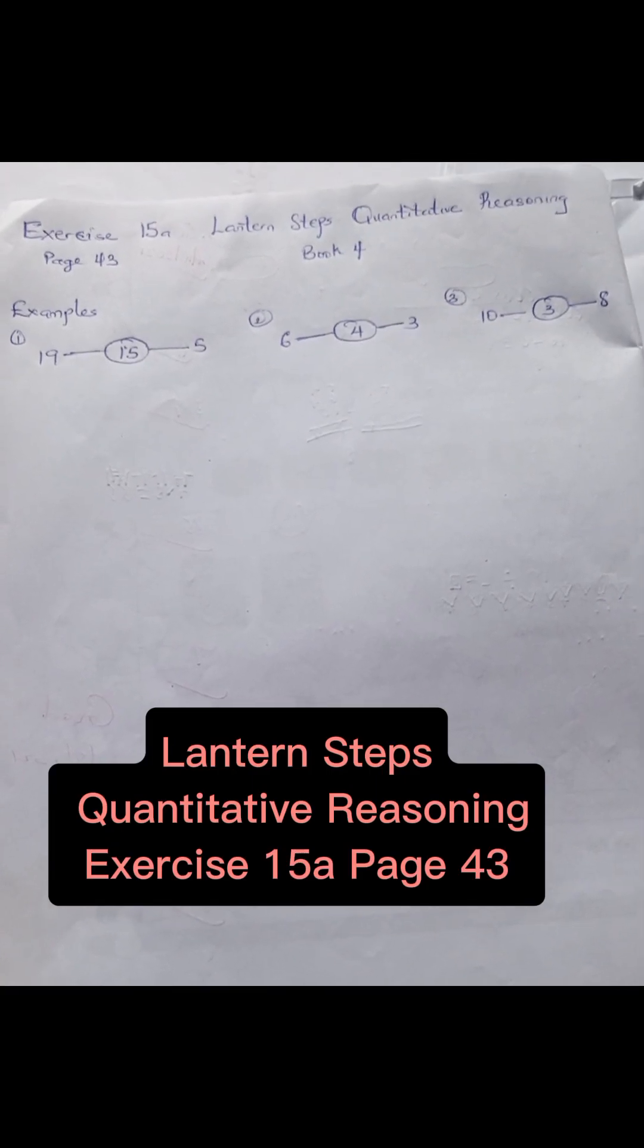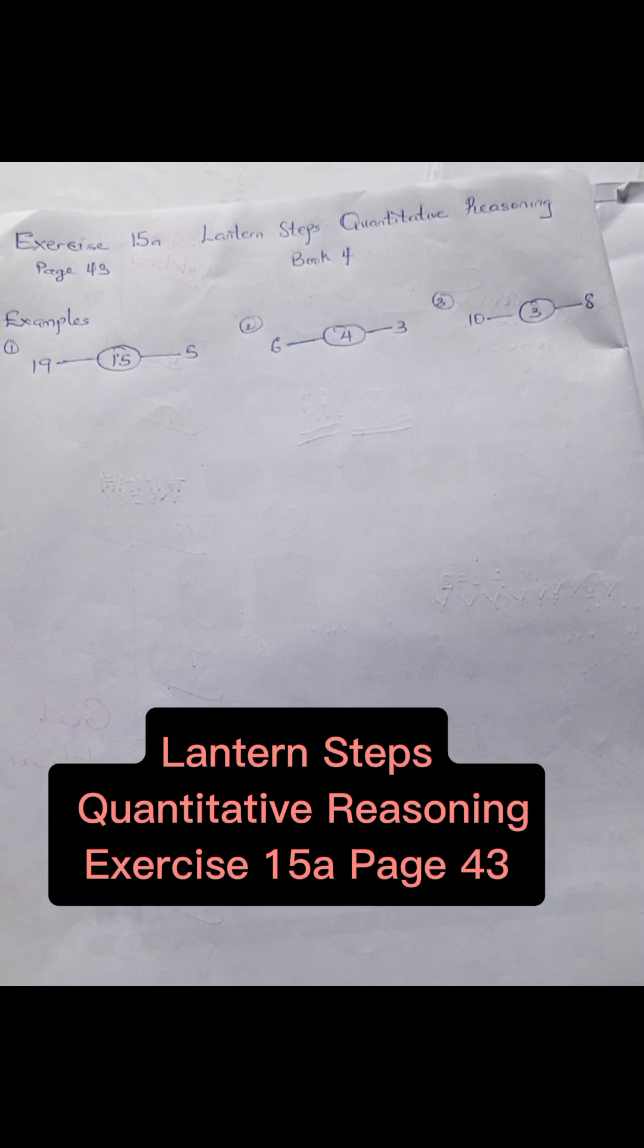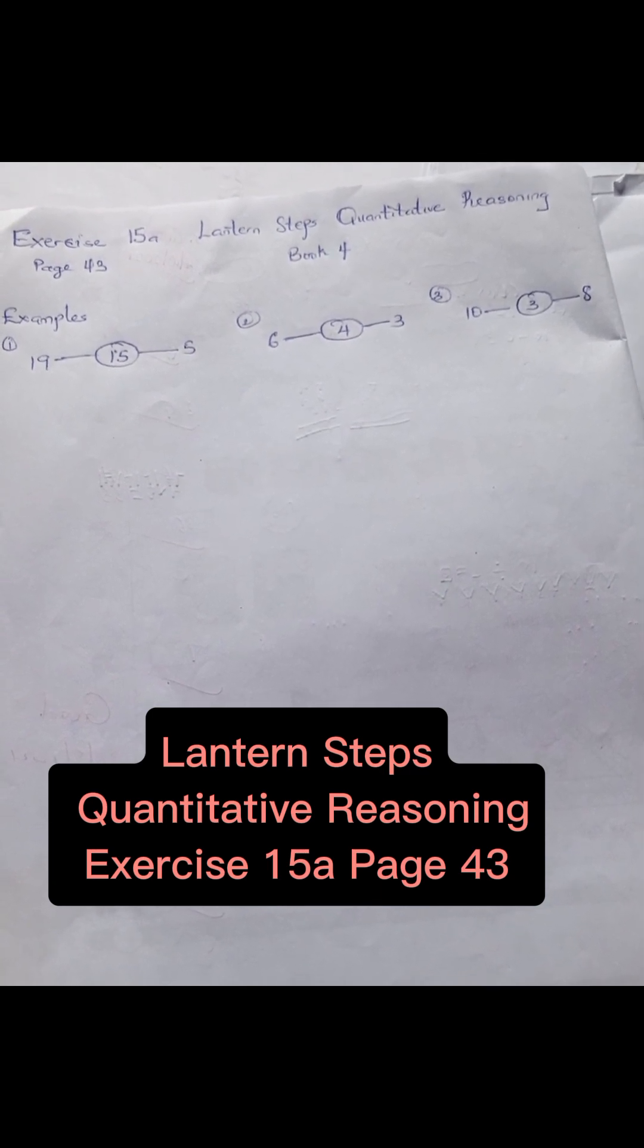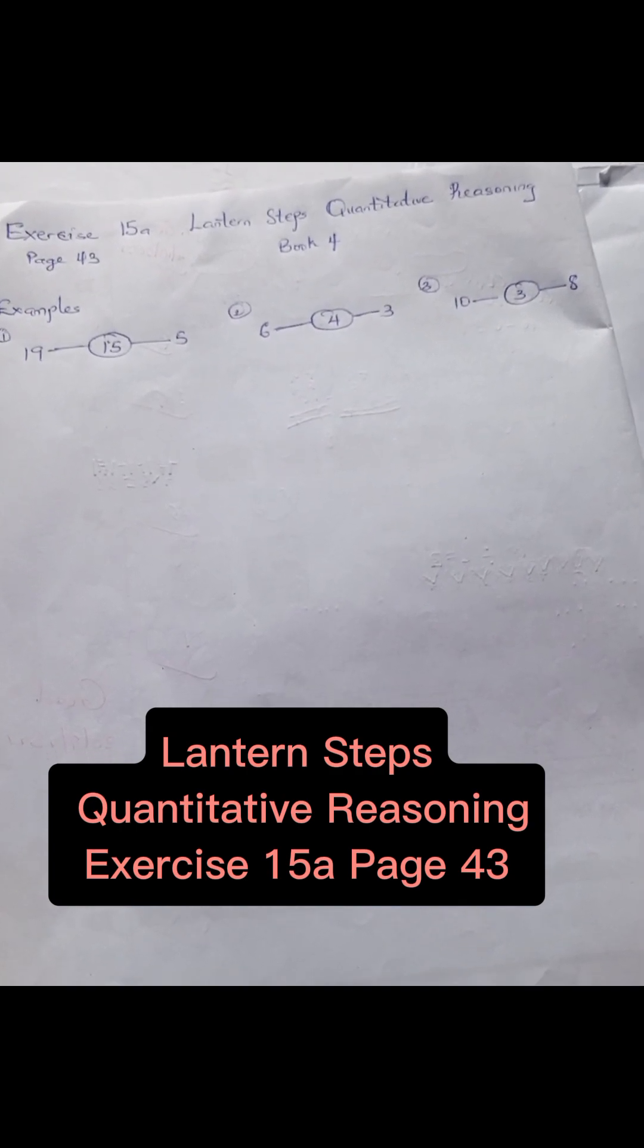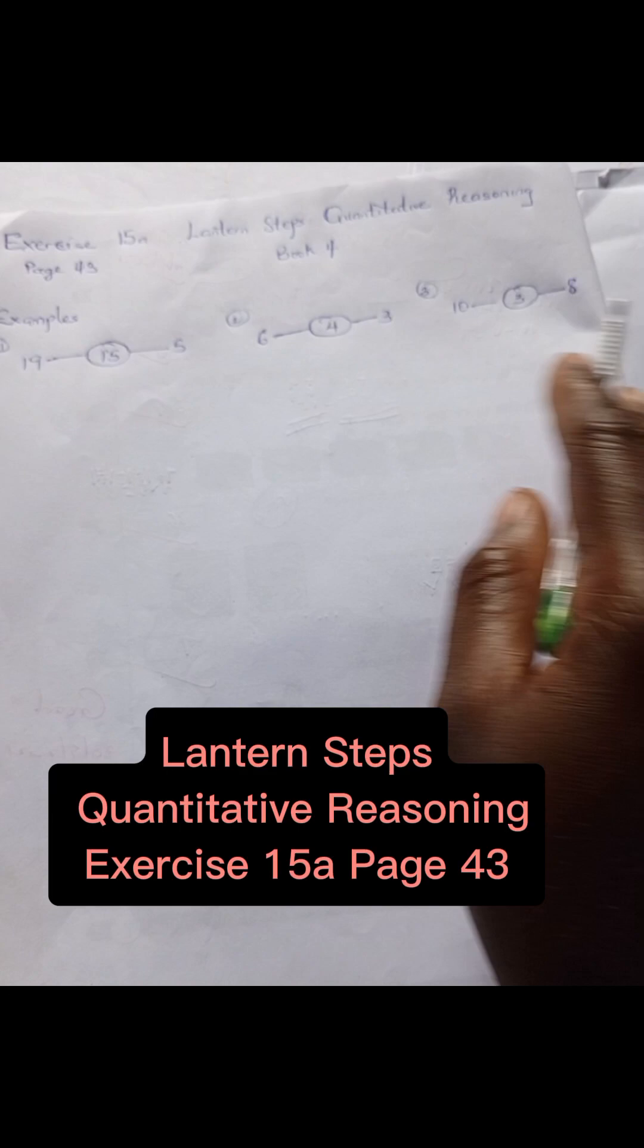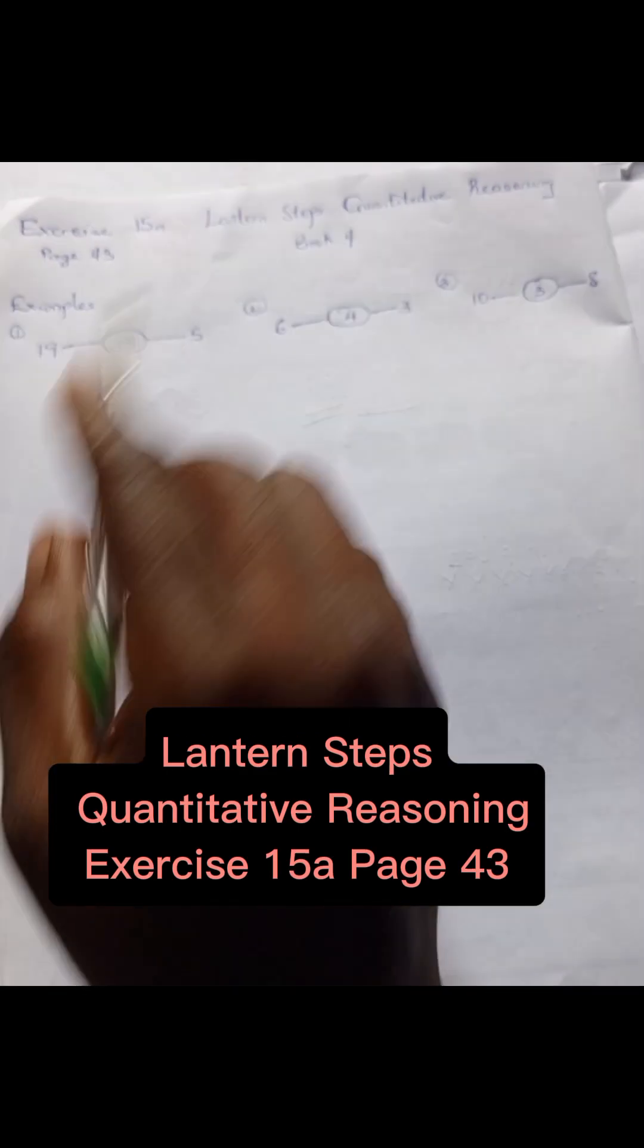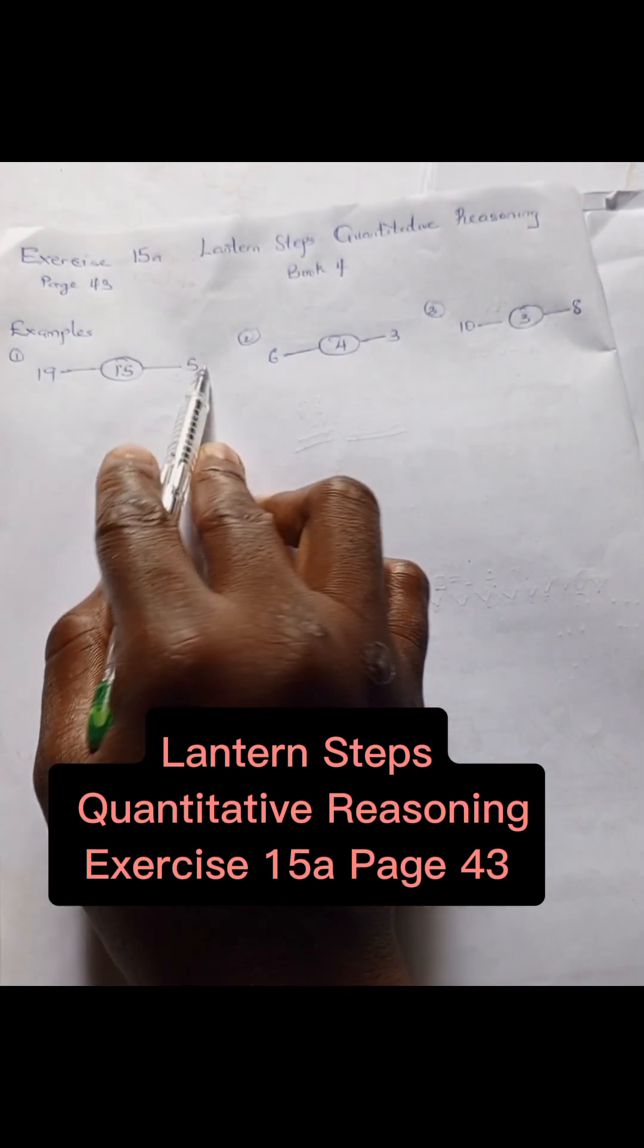Welcome to Quantitative Reasoning Solutions. Today we're going to consider Lantern Steps Quantitative Reasoning Book 4, Exercise 15a. We have these examples before us, and we have 19, 15, and 5.